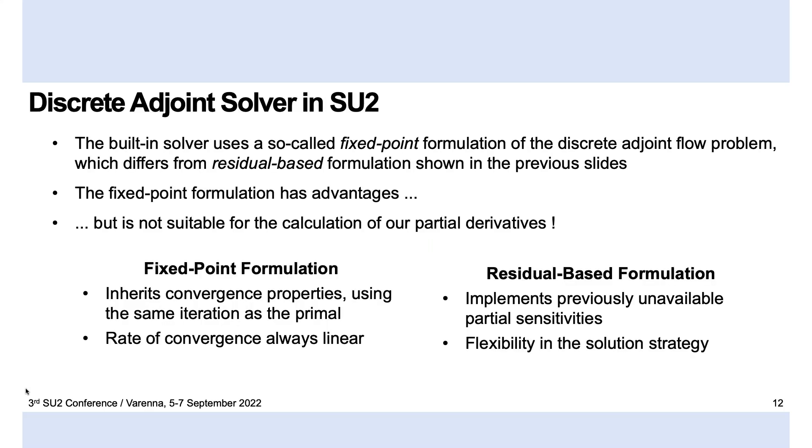The next step was the evaluation of the partial derivatives, which appear in the equations I showed previously. SU2 uses a so-called fixed-point formulation of the discrete adjoint, which has advantages in terms of the convergence behavior. Unfortunately, we were not able to get the partial derivatives that we were looking for directly using this formulation. And so we opted to implement an alternative residual-based formulation, just closer to the equations that I showed in theory.